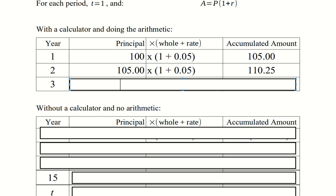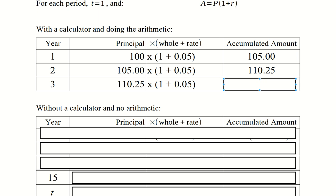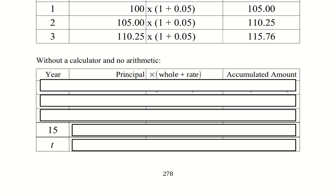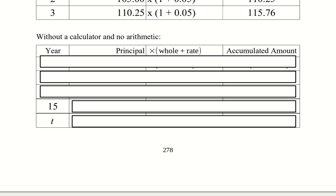The third year starts with an investment of $110.25. Over the course of the year, we get our principle back — that's the 1 — and 5% interest. With rounding, we end up with $115.76. That's entirely numeric.